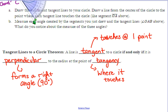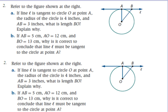Let's look at actually using this property. We have a diagram. Number two says: refer to the figure shown at the right. If line L is tangent to circle O at point A — when I read that, I should immediately go to point A on the diagram and put a little right angle there, because if it's tangent right there, then I've got a 90-degree angle. That's what our theorem just said. The radius of the circle is four inches, so AO is my radius — I'll put four right there.